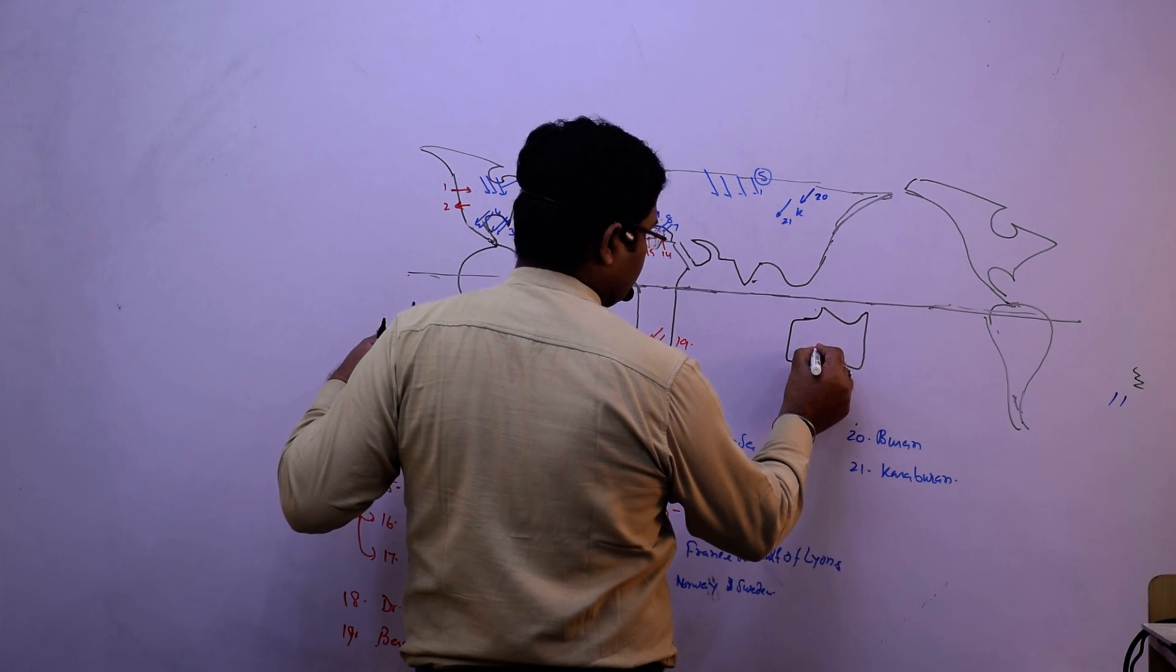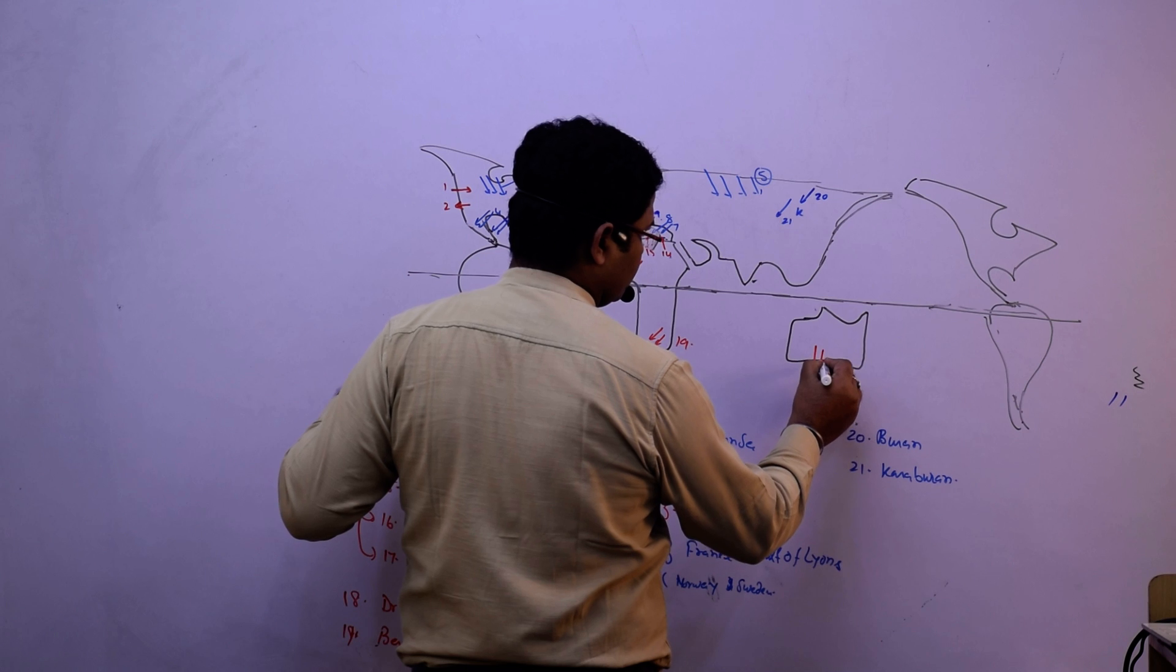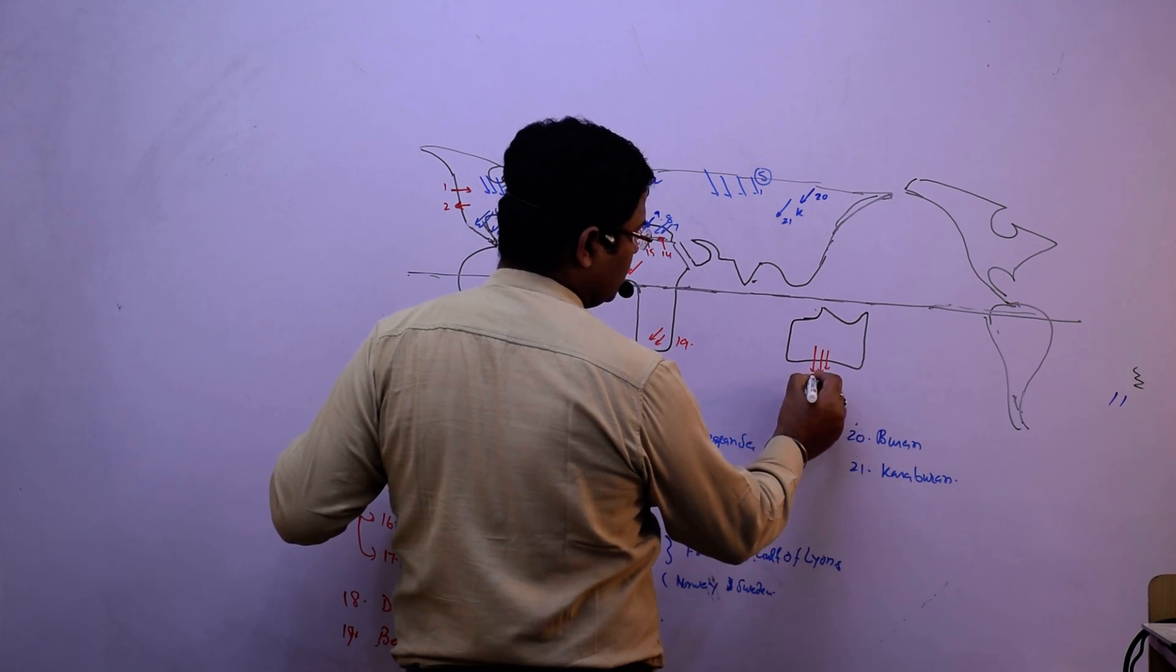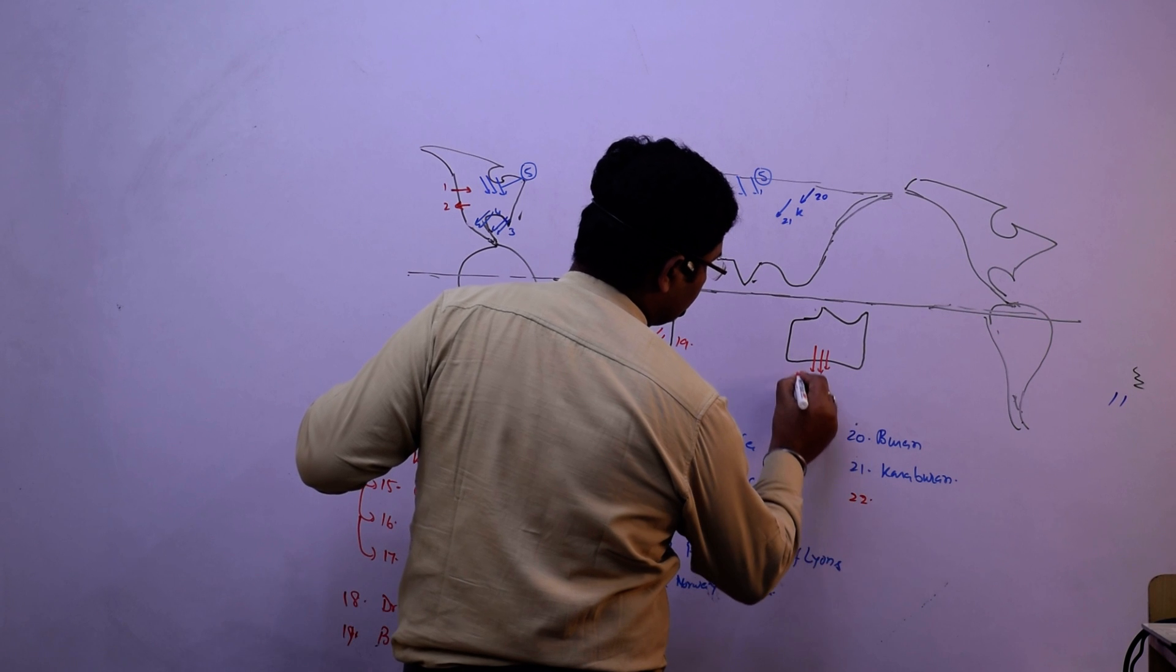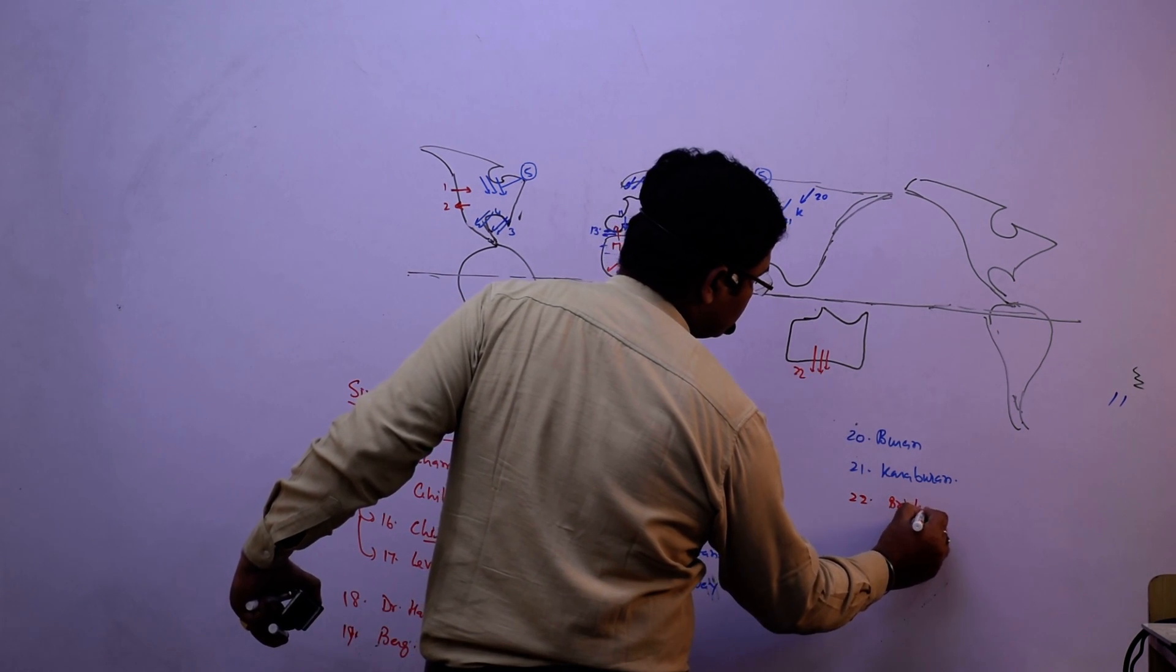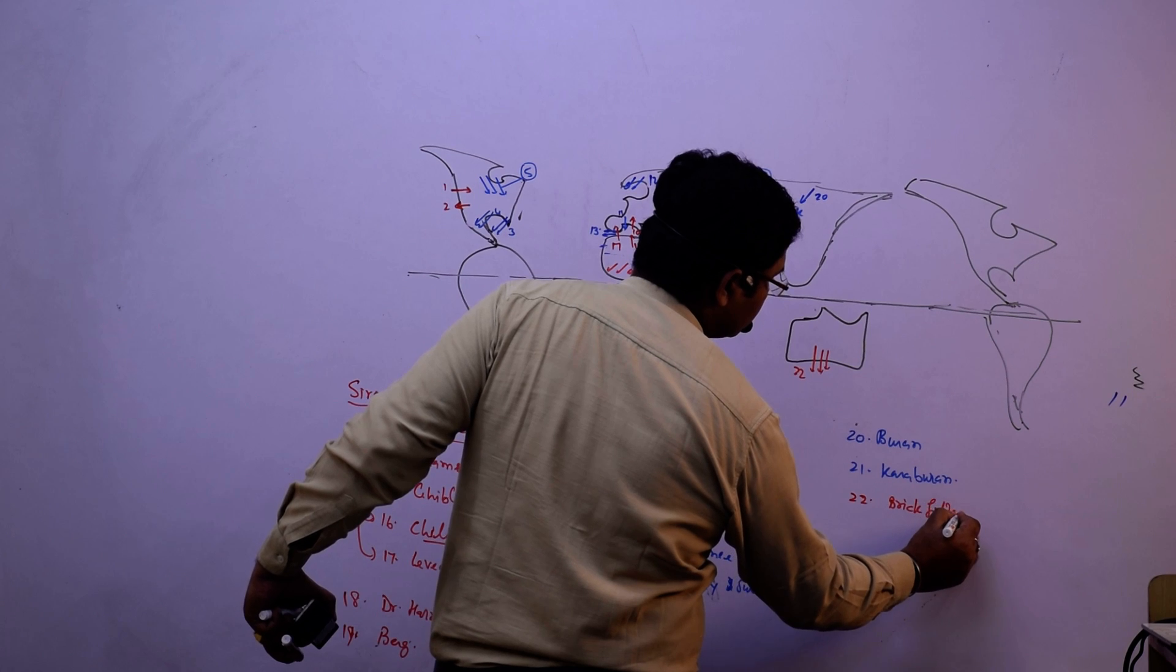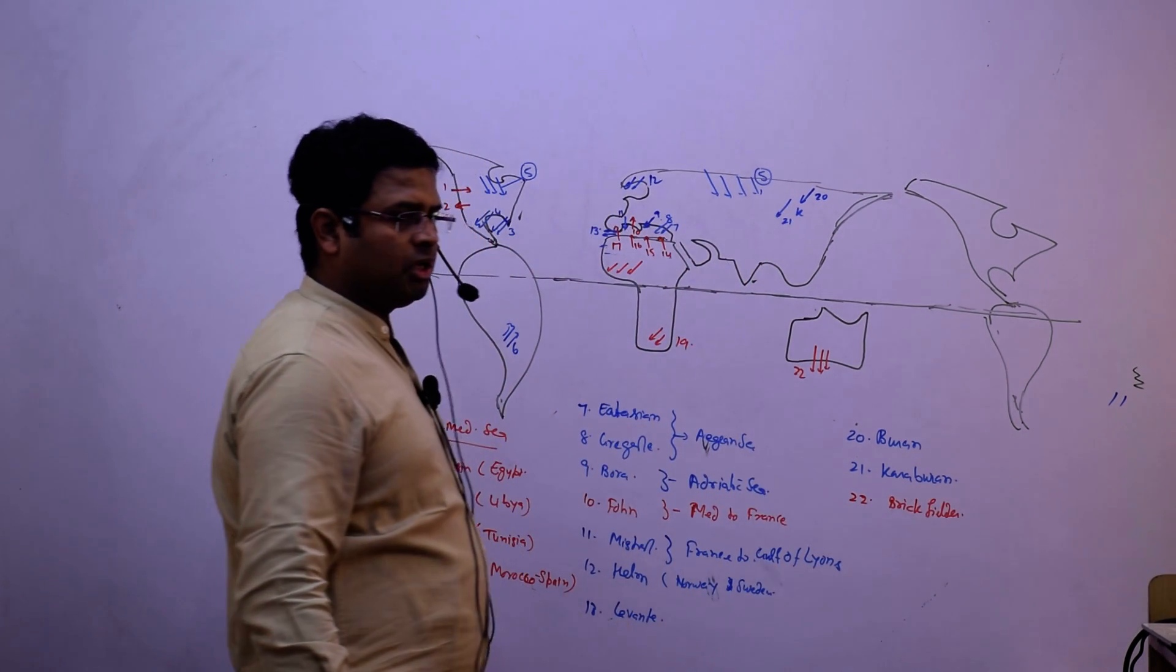And here is a desert side, low latitude, high latitude. It is 22. Brick Filder in Australia, Brick Filder.